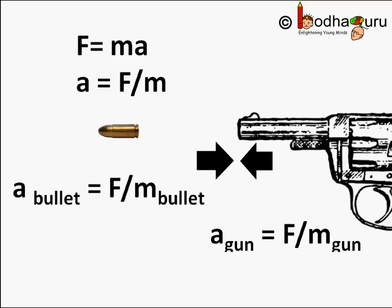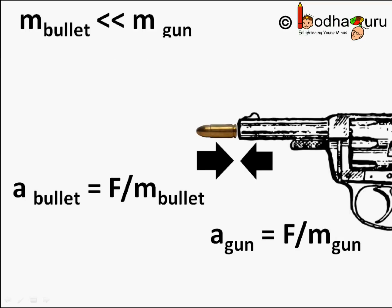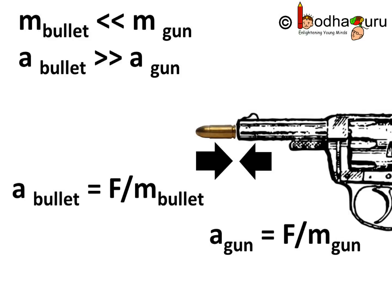But the mass of the bullet is very much smaller than the mass of the gun. So the acceleration on the bullet is much higher as it is much lighter. Action and reaction may not produce acceleration of the same magnitude, as they are working on different objects which have different masses.